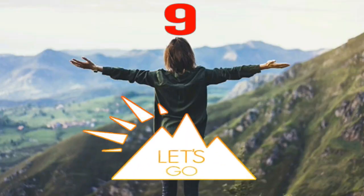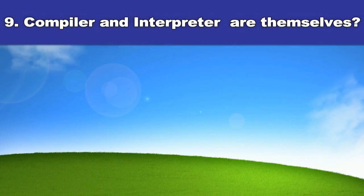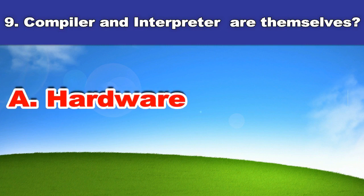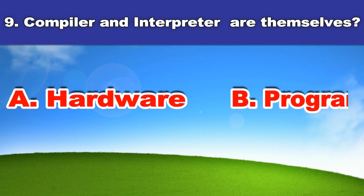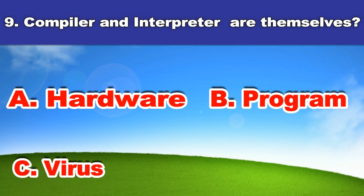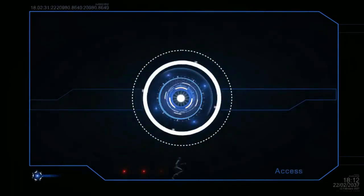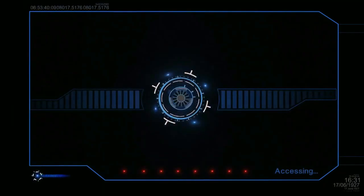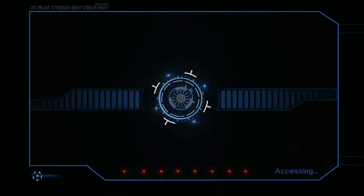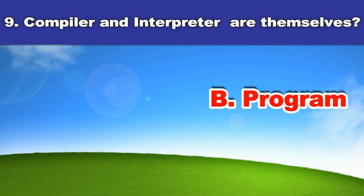Ninth question: Compiler and interpreter are themselves? A. Hardware. B. A program. C. A virus. D. None. And the answer is program.